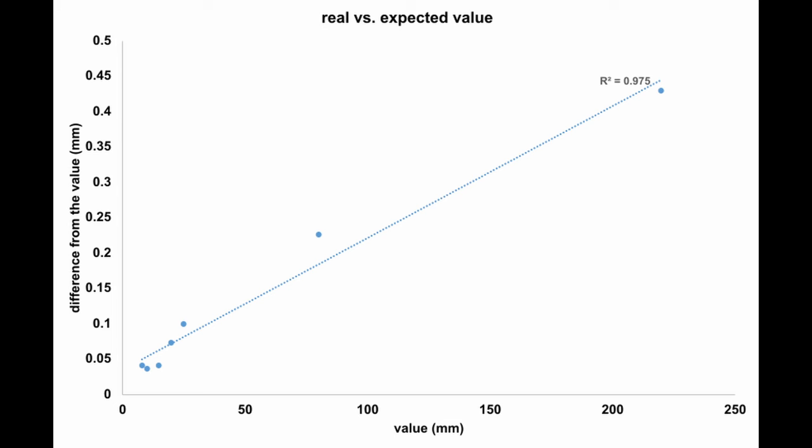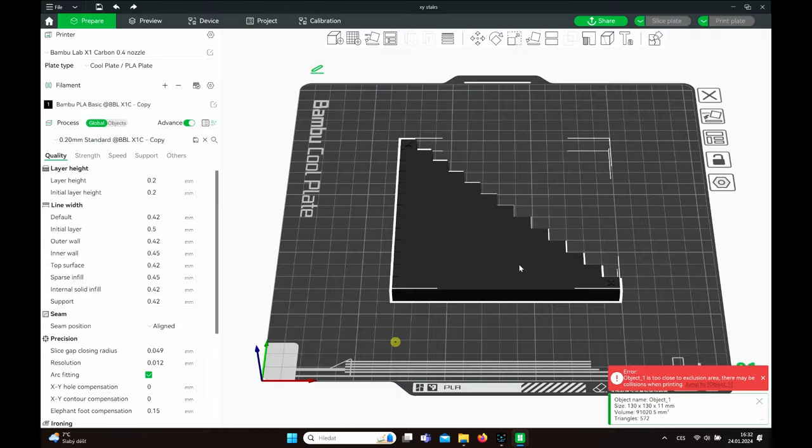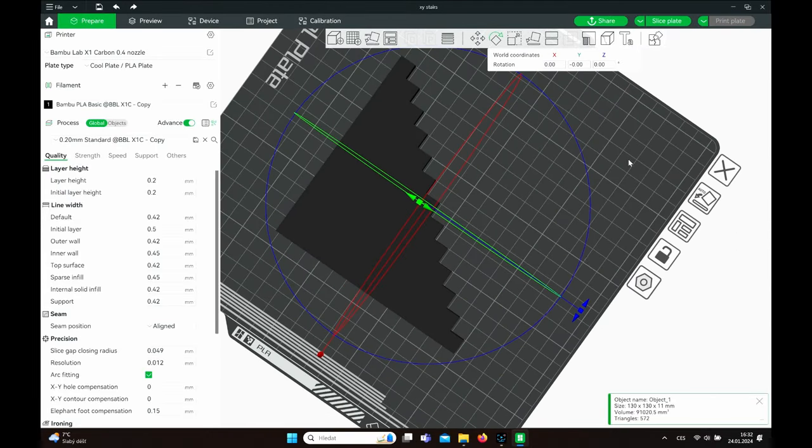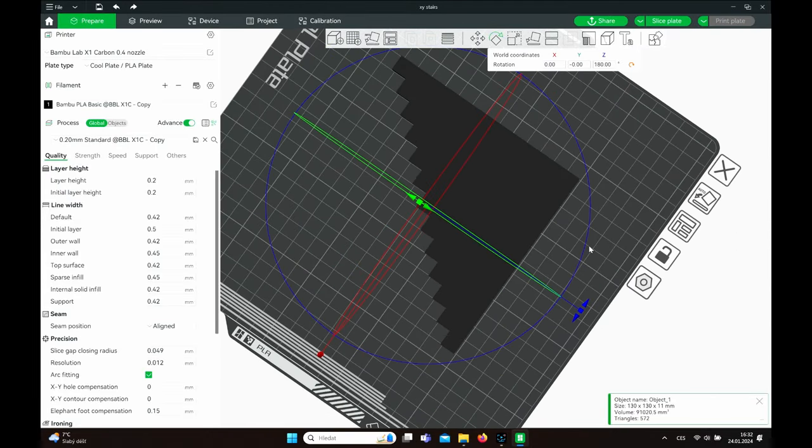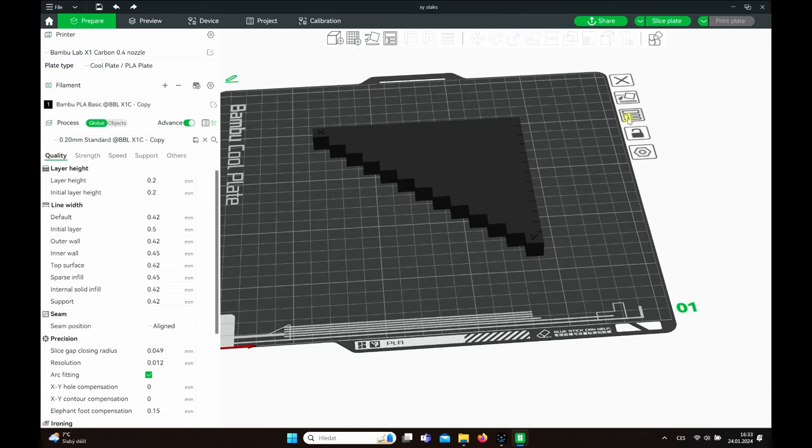I tried to plot the difference between theoretical and all the measured values. And the good thing is that it is somehow linear, so probably caused by shrinkage. It also brought me an idea for some advanced testing. So I prepared this simple model.